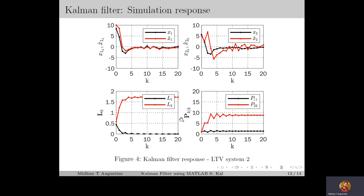This implies that in steady state we can use a fixed gain matrix L, and the variance will be given by a fixed matrix P.